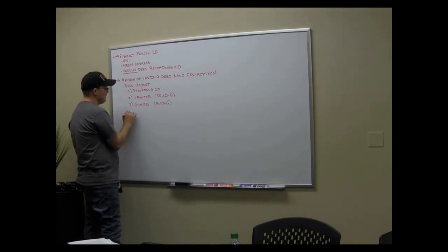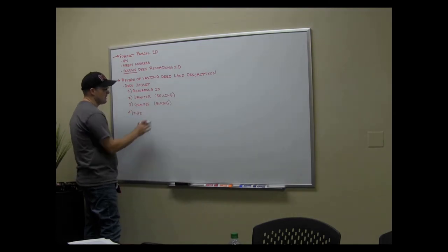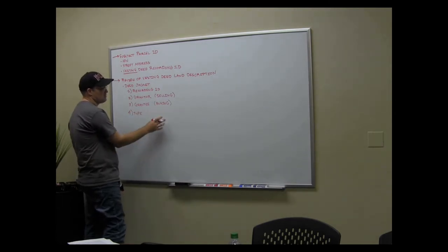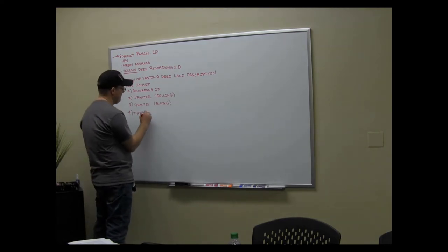So your book and page or your document number, and it's going to give you your grantor, that's who's giving the property, so this guy is selling. And it will give you the grantee, that's who's buying. And it will usually tell you the type of deed.